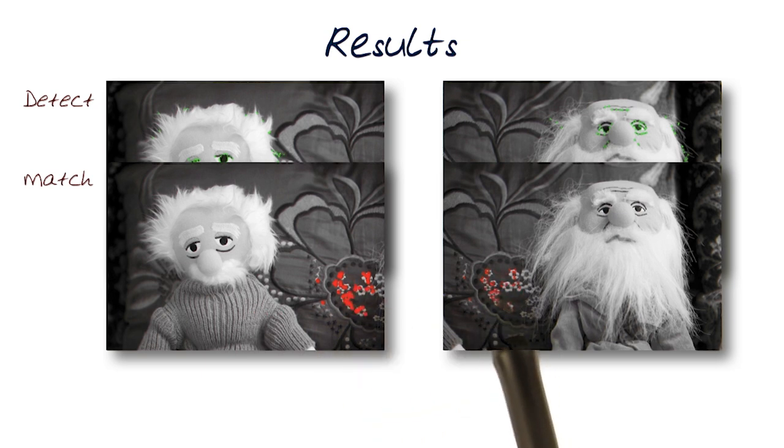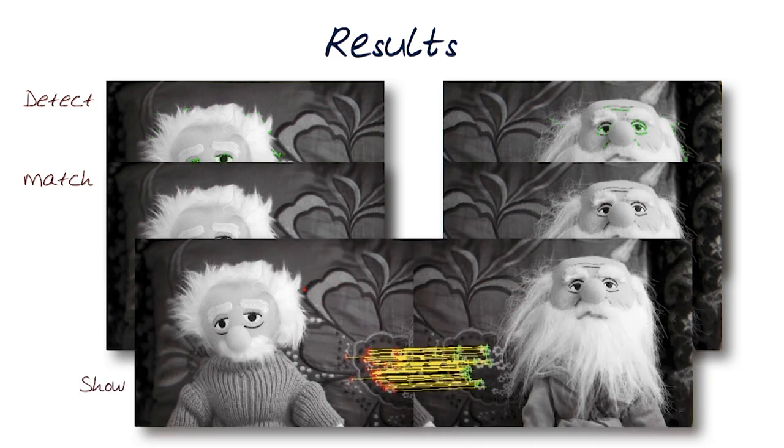Here it finds and matches features that are similar between these two. Once I match them, I can register them together. If I register, then I can use that to align the two images together, which I'm not actually showing. I'm just showing that these two features are now matched between these two images.